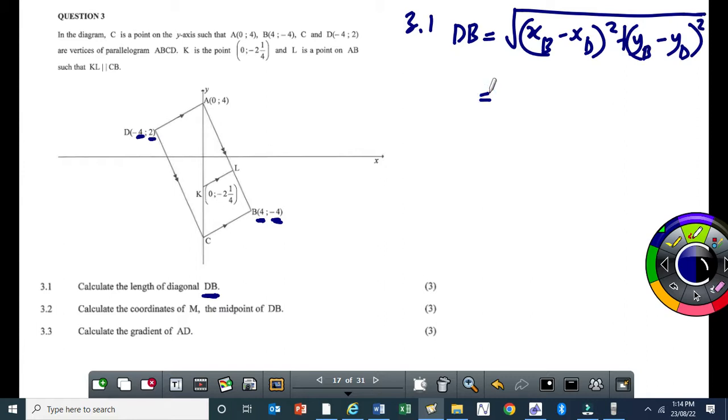What is the x value at B? It's 4. So this will be 4 minus the x value at D which is minus 4. So that will be minus 4 squared plus the y value at B is minus 4. And the y value at D is 2.